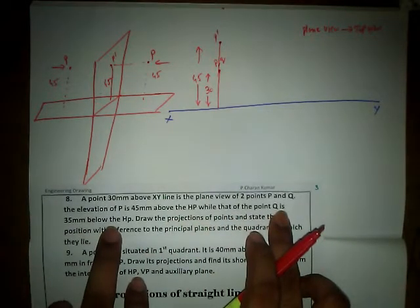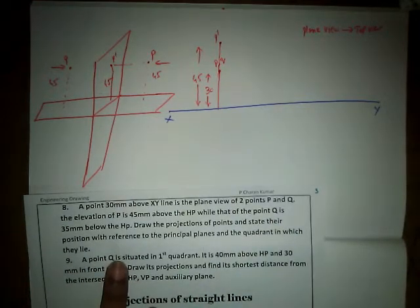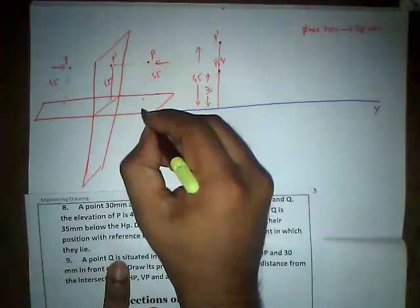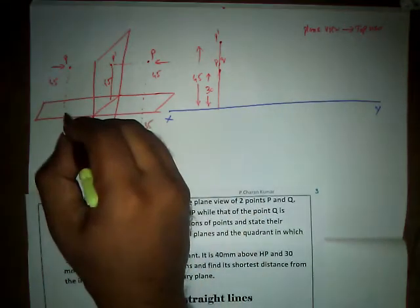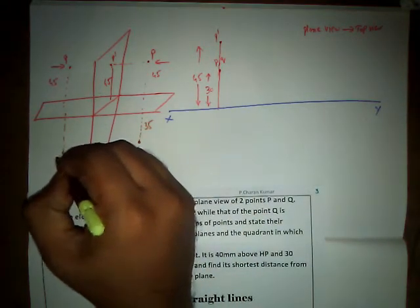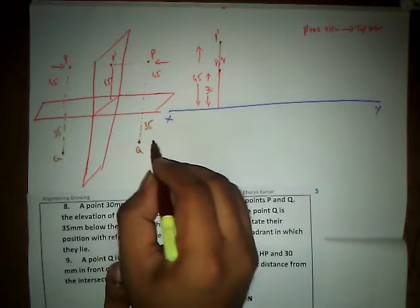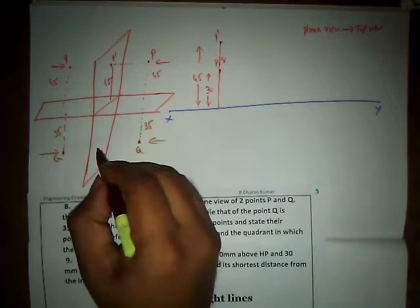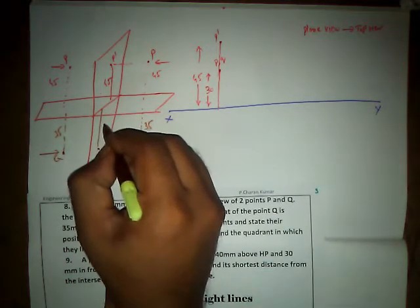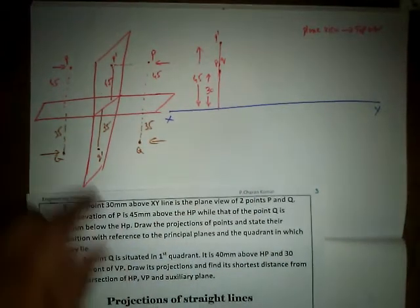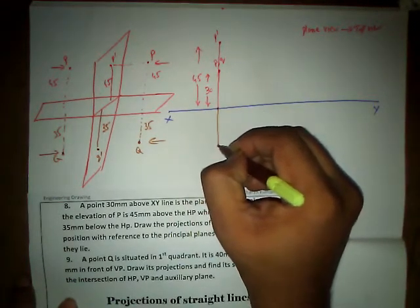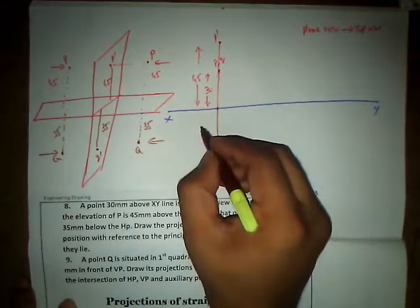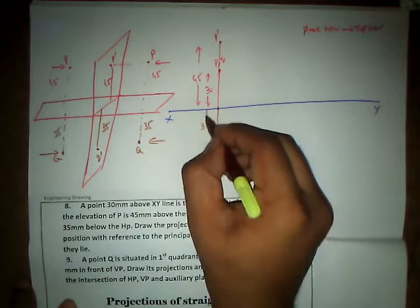Now for point Q — it is 35mm below HP. The point Q can be below at 35mm in different positions. Viewing from the front, we get Q' below the XY reference line. This front view Q' is at a distance of 35mm from the XY reference line. We are done with the projections.